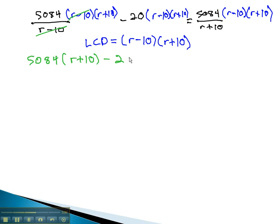Again, we have a difference of squares, so we'll multiply the first and last terms to get r squared minus 100. And with the r plus 10's dividing out, we get 5084 times r minus 10.